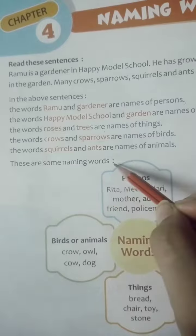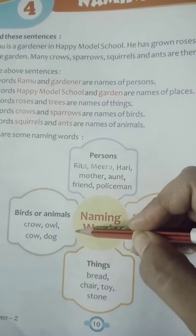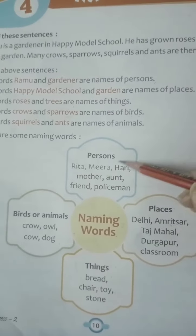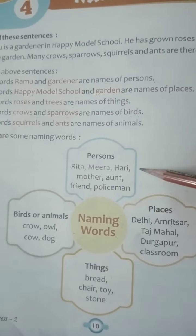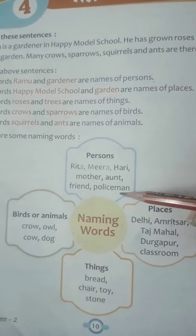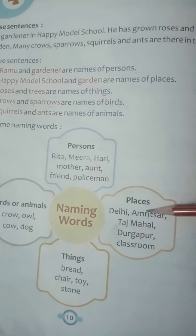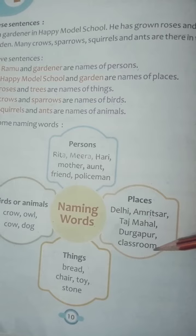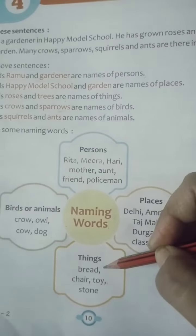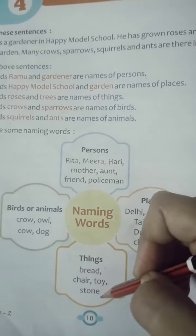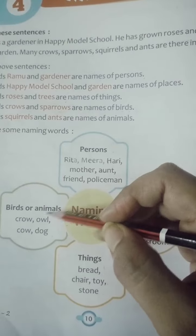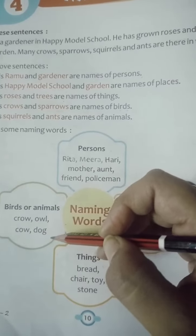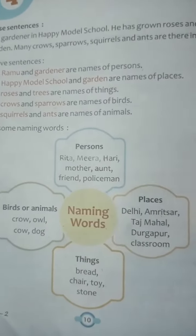These are some naming words. Naming words include persons, places, things, birds or animals. Persons: Rita, Meera, Hari, mother, aunt, friend, policeman. Places: Delhi, Amritsar, Taj Mahal, Durgapur, classroom. Things: bread, chair, toy, stone. Birds or animals: crow, owl, cow, dog.